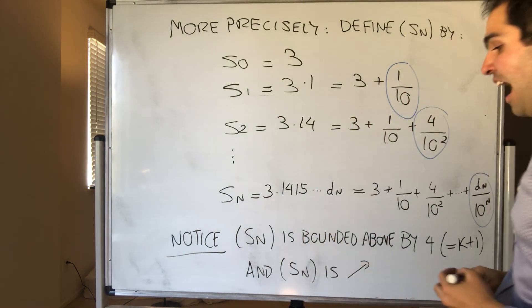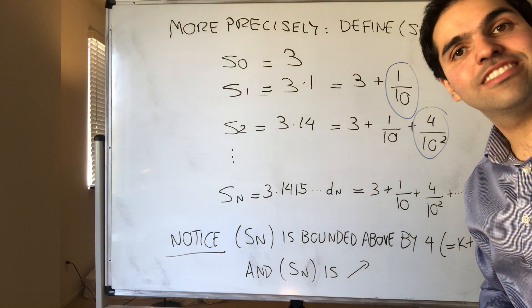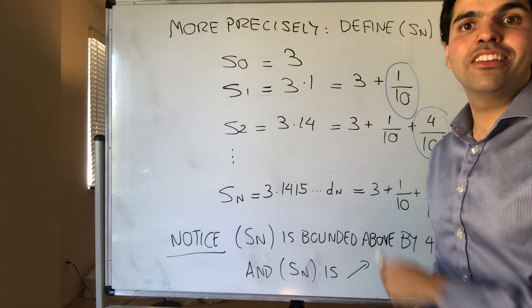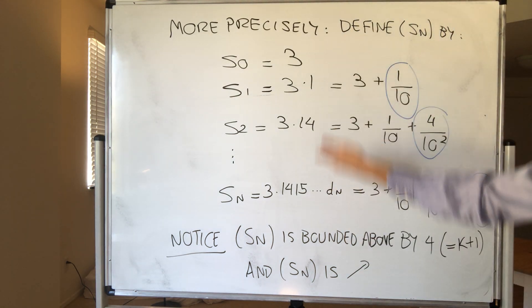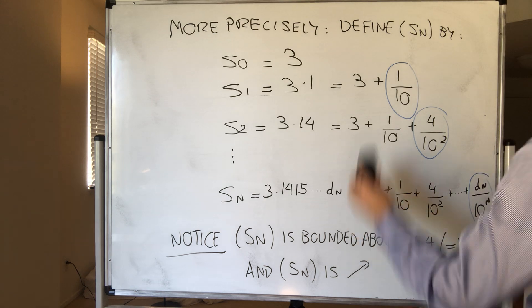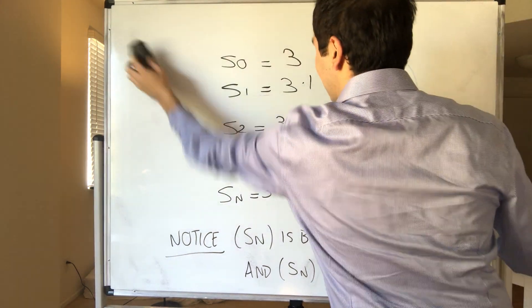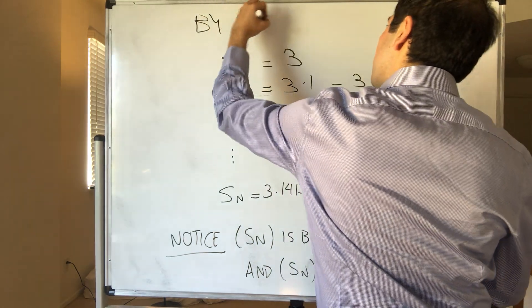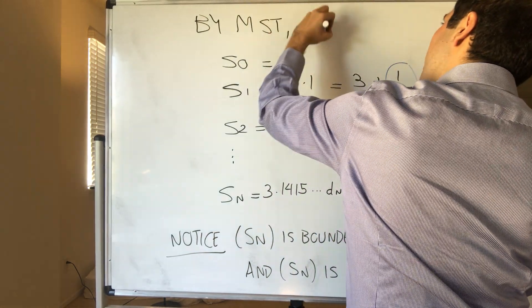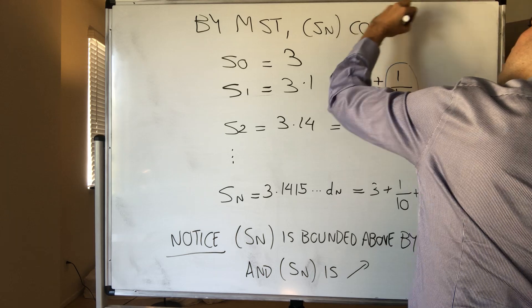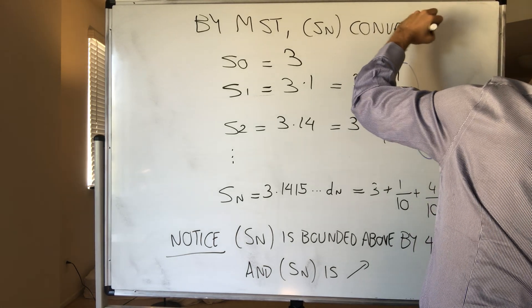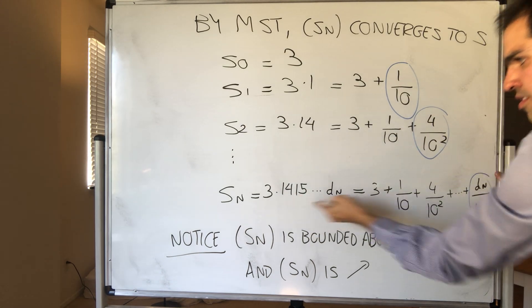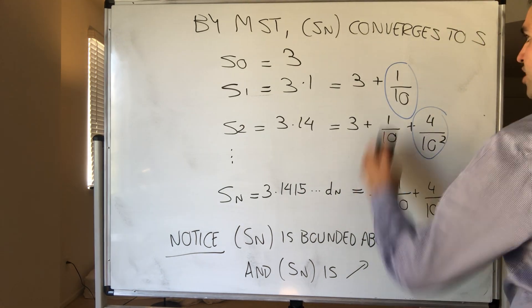And what do we have? A bounded above sequence that's increasing? BAM! We can use the monotone sequence theorem. So we know this sequence is convergent. So by MST, monotone sequence theorem, Sn converges to S.